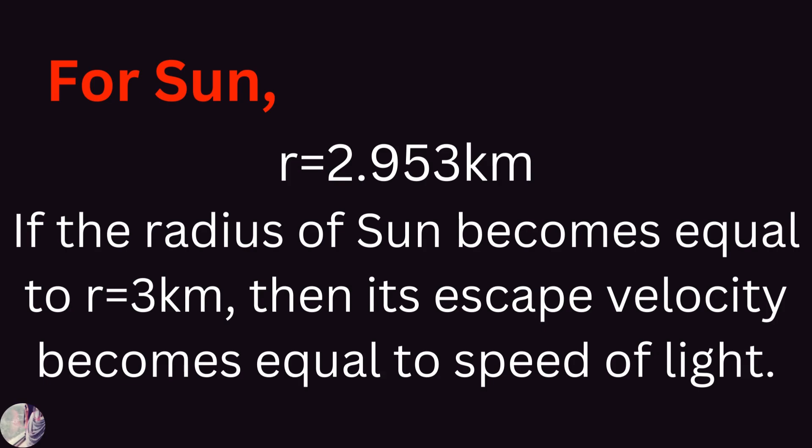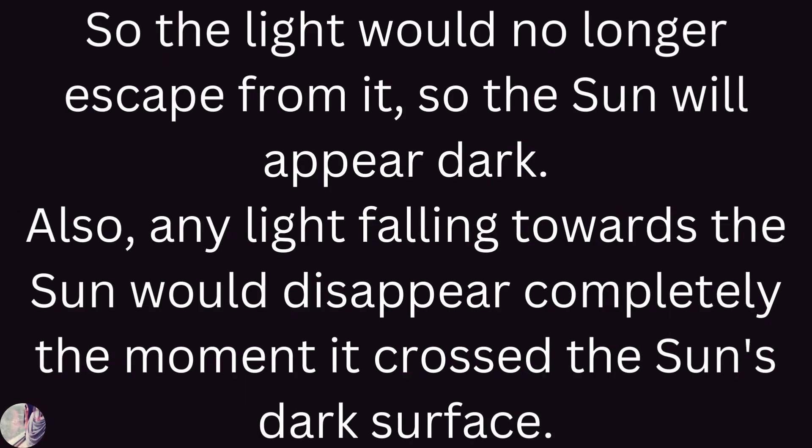If the radius of the Sun becomes approximately equal to 3 km, then its escape velocity becomes equal to the speed of light, and light would no longer escape from it — so the Sun would appear dark.